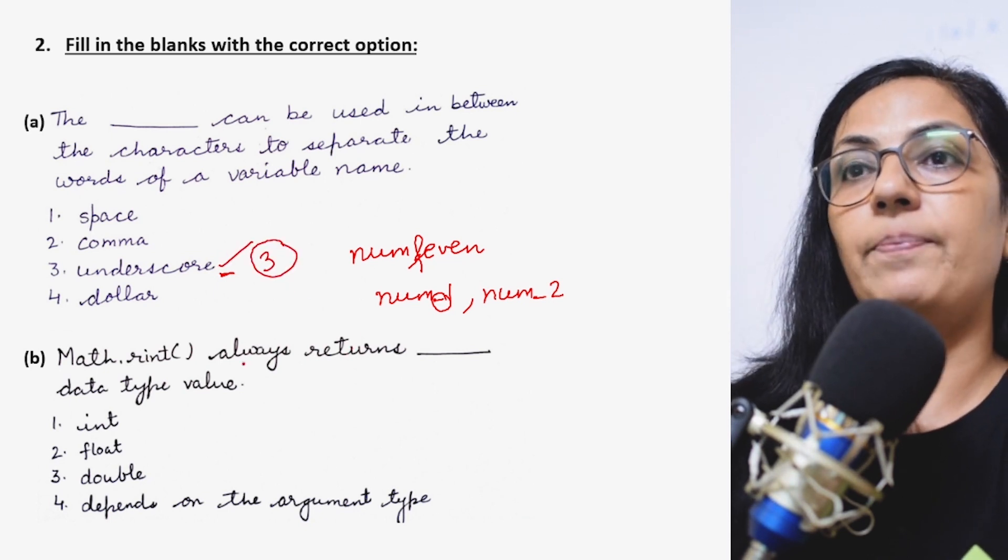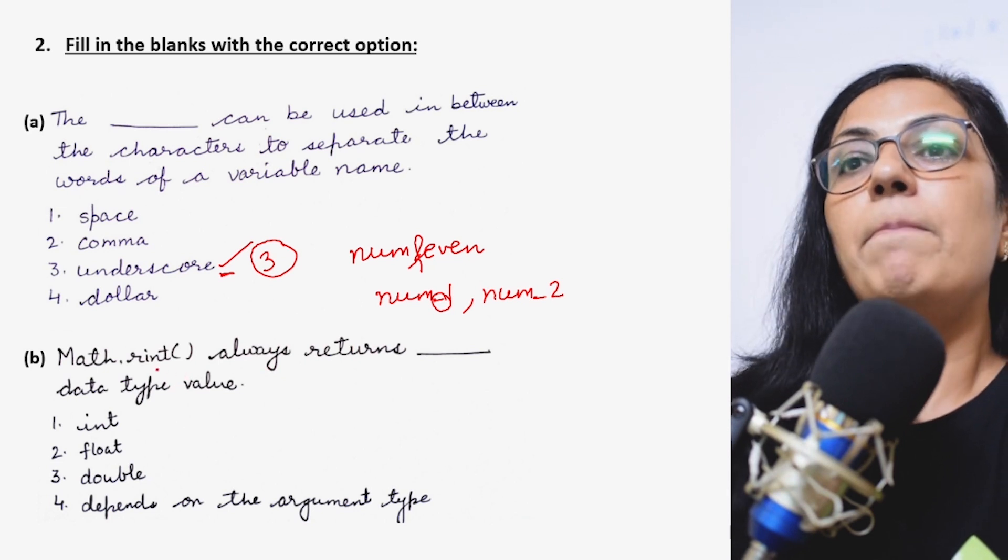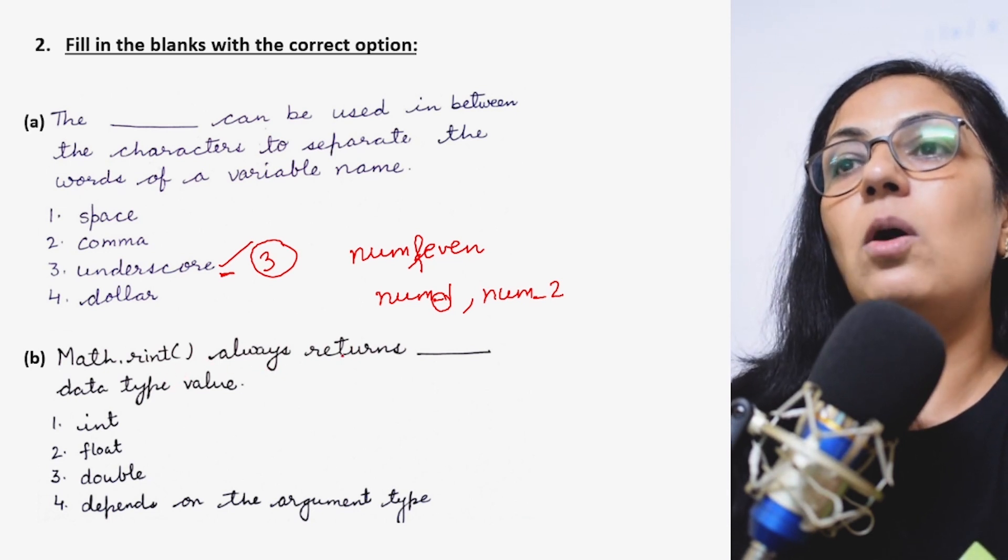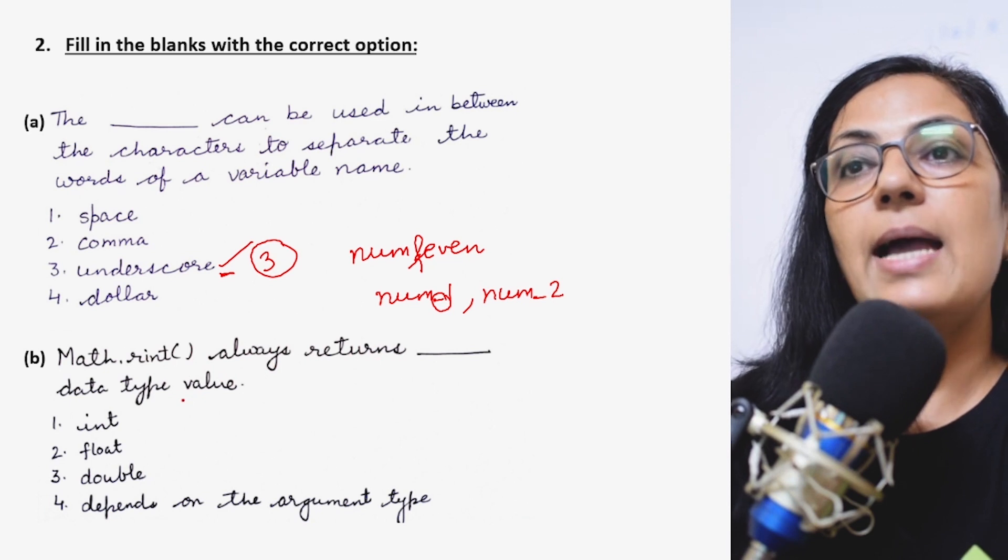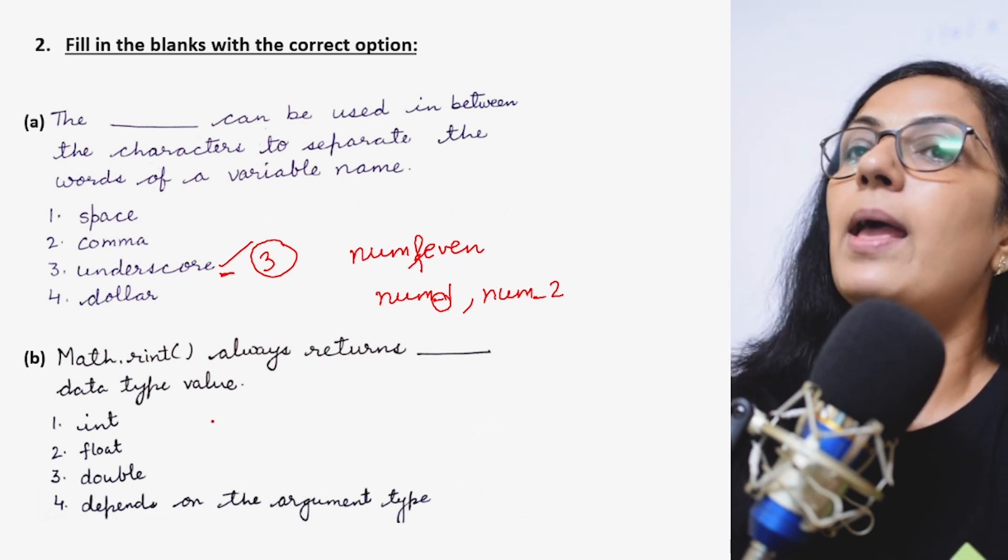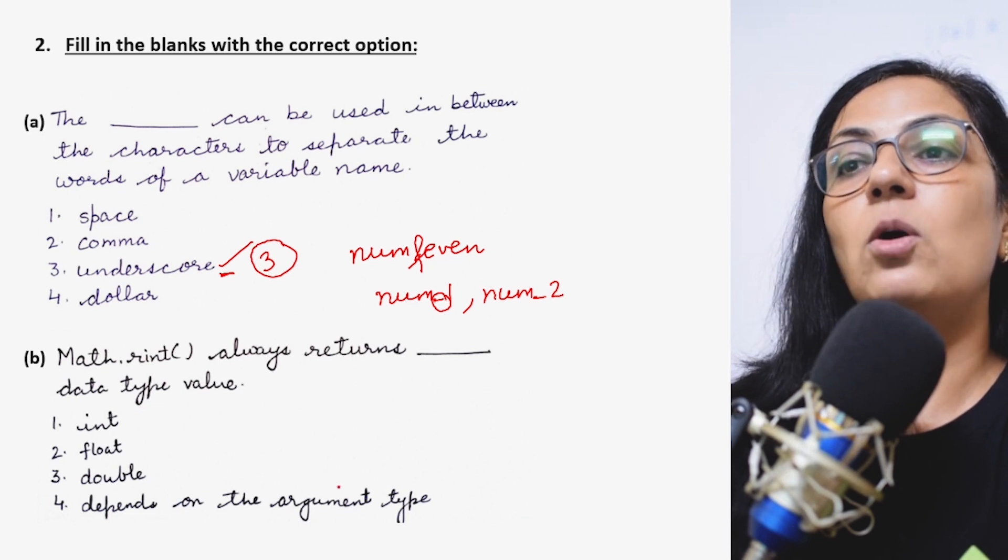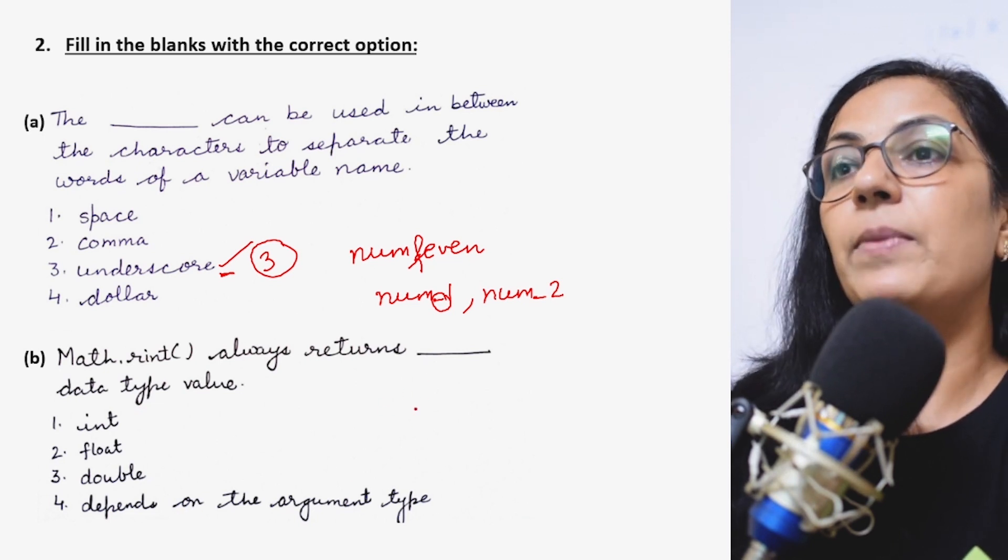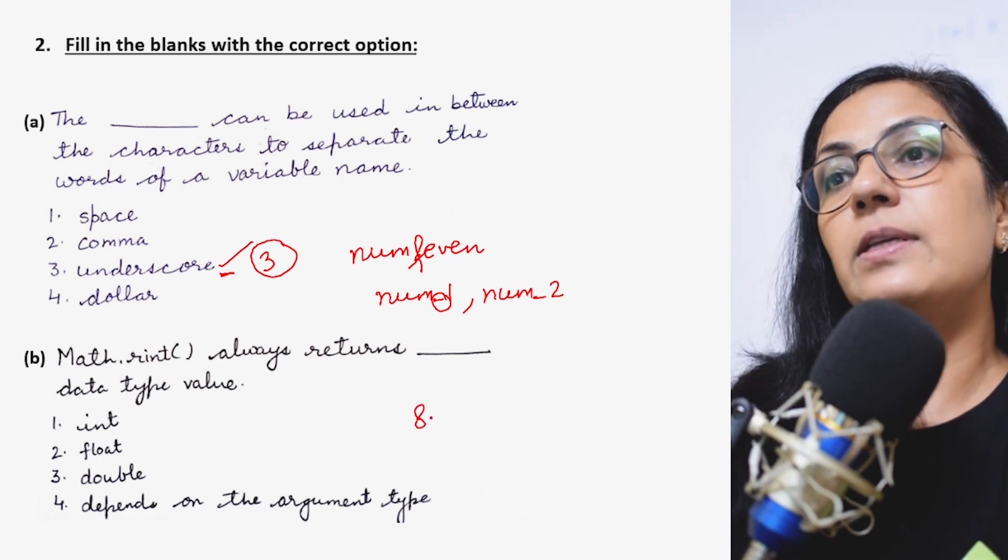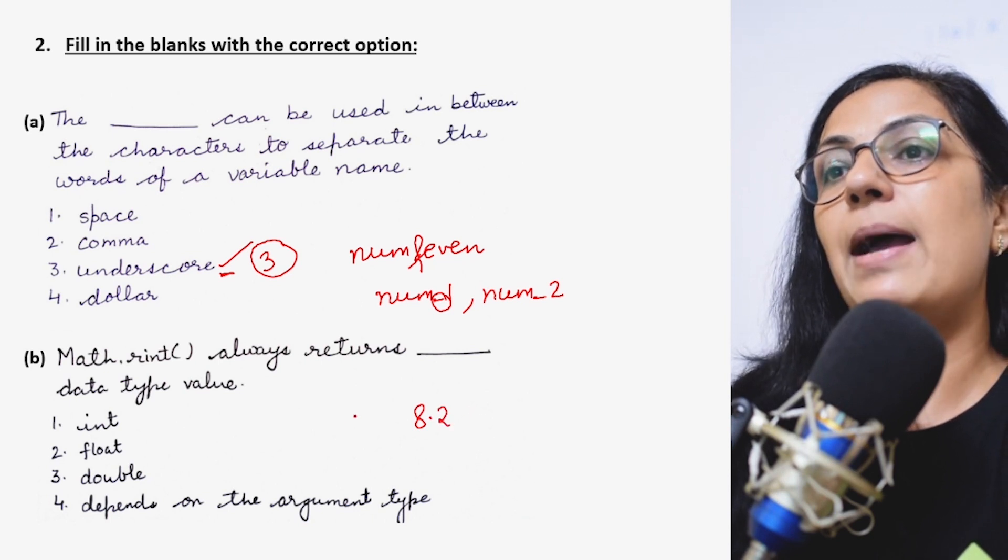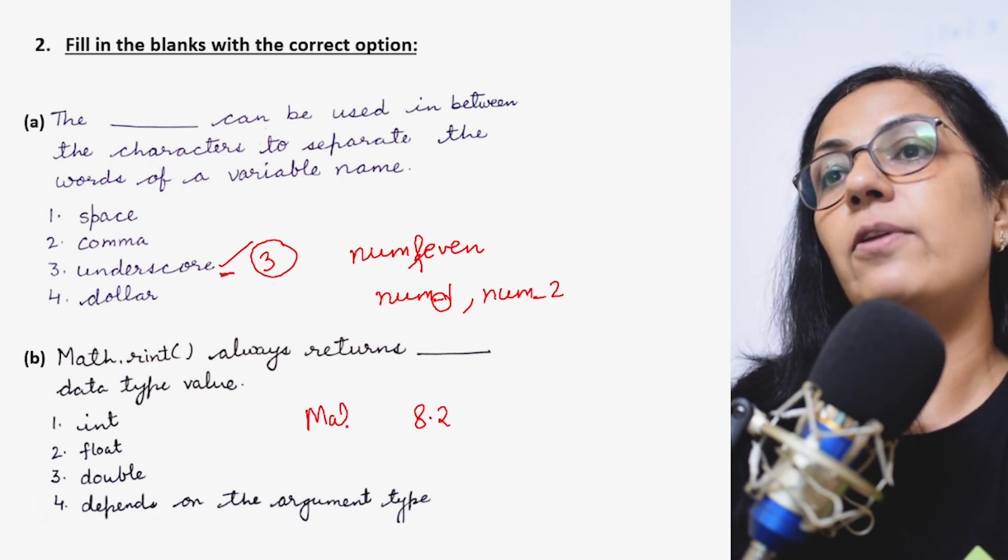Next is Math.rint always returns dash data type value and the options are int, float, double, depends on the argument type. Children, if it is 8.2, Math.rint function if we are using, what it will return?